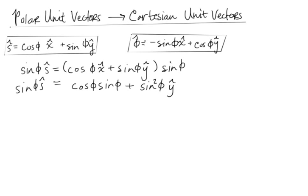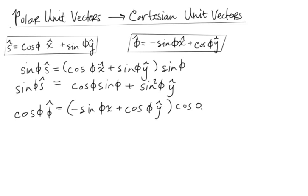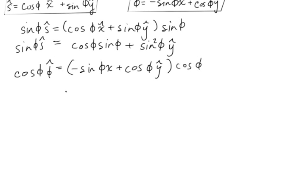For φ̂, we're going to multiply by cos φ. So cos φ · φ̂ equals (−sin φ x̂ + cos φ ŷ) times cos φ. Distributing, we get −sin φ cos φ x̂ plus cos²φ ŷ. Now we're going to add these two equations together and see if something cancels.